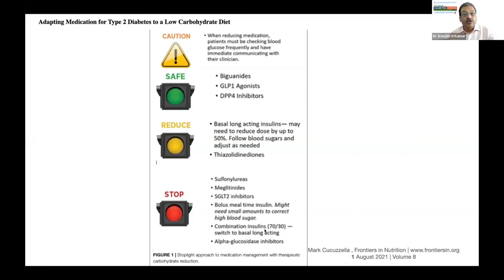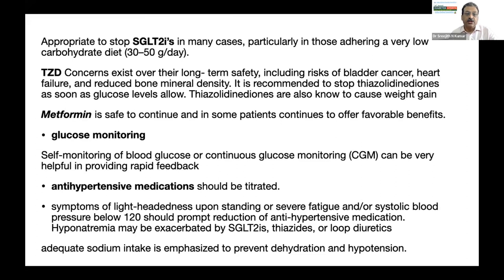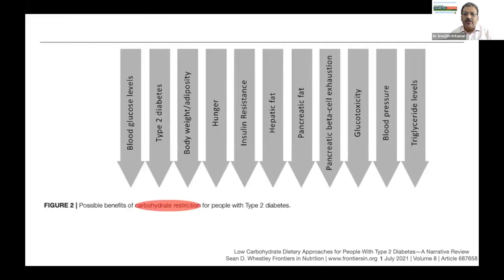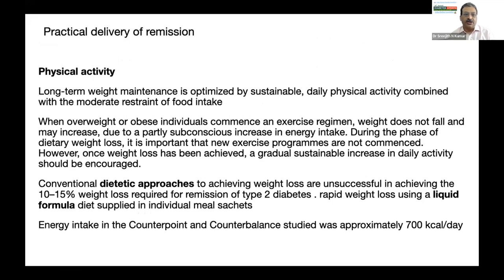Alpha-glucosidase inhibitors are no longer required because with a low carb diet postprandial blood glucose will not go up. SGLT-2 inhibitors may be somewhat dangerous if there is dehydration. Blood glucose and blood pressure should be monitored, as BP will often come down and will also call for reduction in blood pressure medications. The simple technique of carbohydrate restriction can bring down blood glucose and possibly lead to remission of diabetes, and it has now been accepted by many international agencies including Diabetes UK, the British Diabetes Association, the Scottish Intercollegiate Guidelines Network, ADA, and EASD.